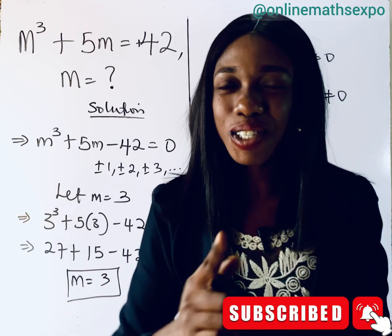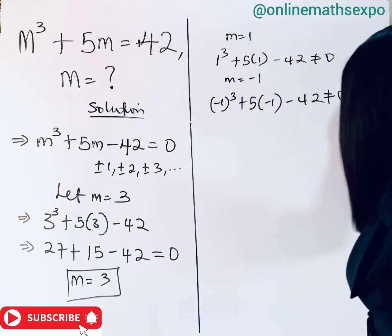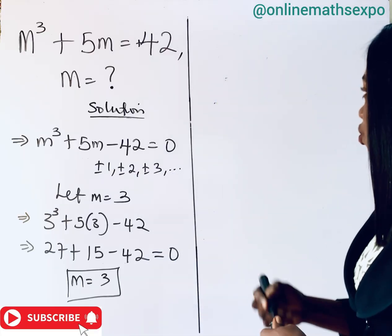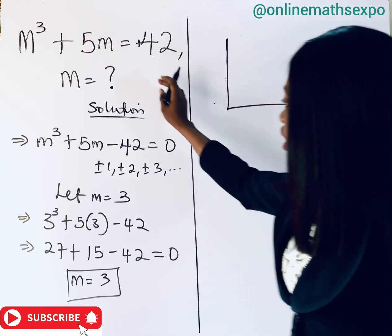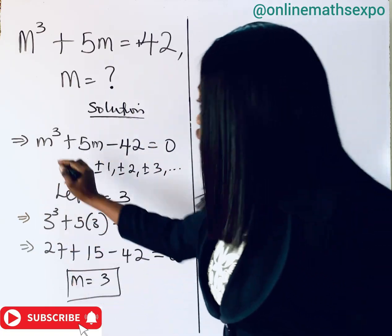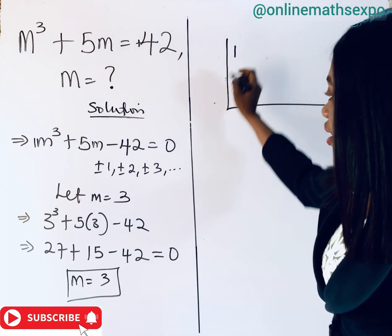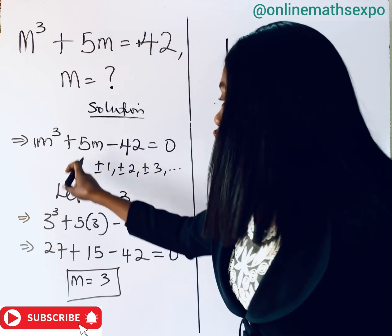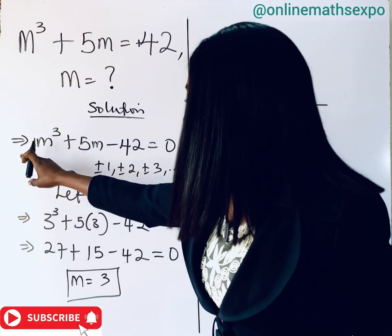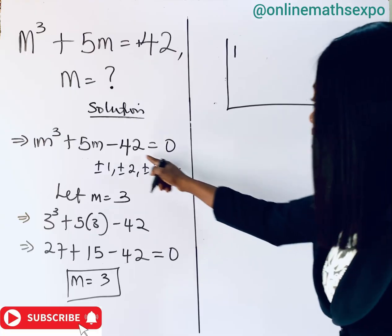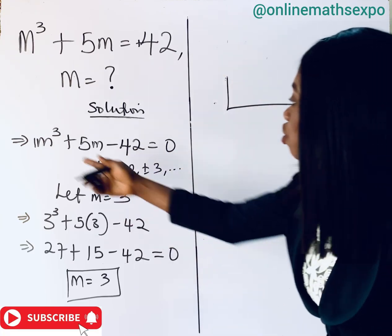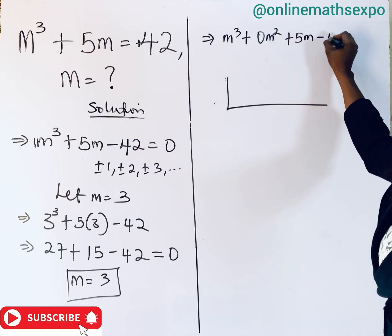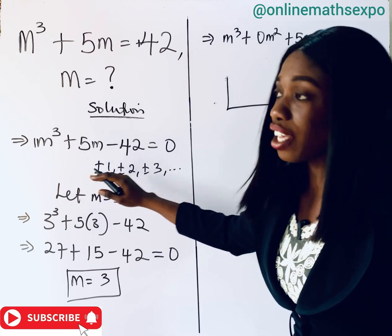Now we use synthetic division to find the remaining two values. Synthetic division works with coefficients only. Our equation m³ + 5m − 42 = 0 can be rewritten as m³ + 0m² + 5m − 42 = 0, since there is no m² term — its coefficient is zero.